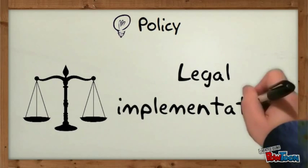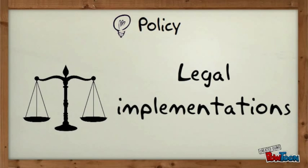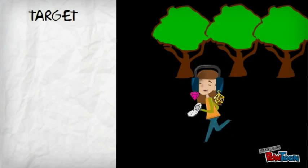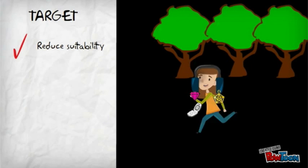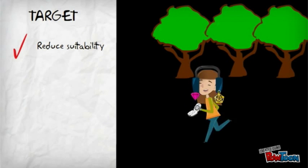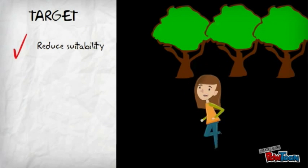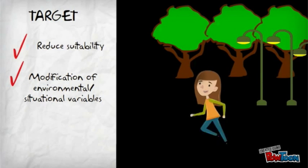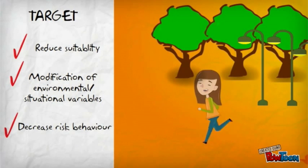Lastly, legal implementations include offence penalties as well as imprisonment. Putting these implications together using an example of a girl jogging at night, we might want to reduce her target suitability by encouraging her not to carry obvious valuables around, install lampposts to increase crime visibility and advise her to jog in the day instead of at night.